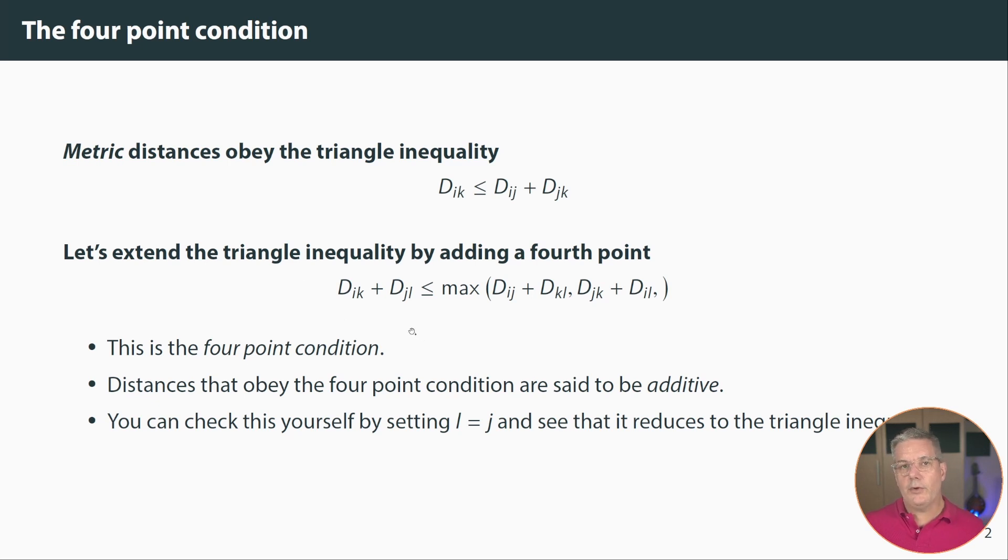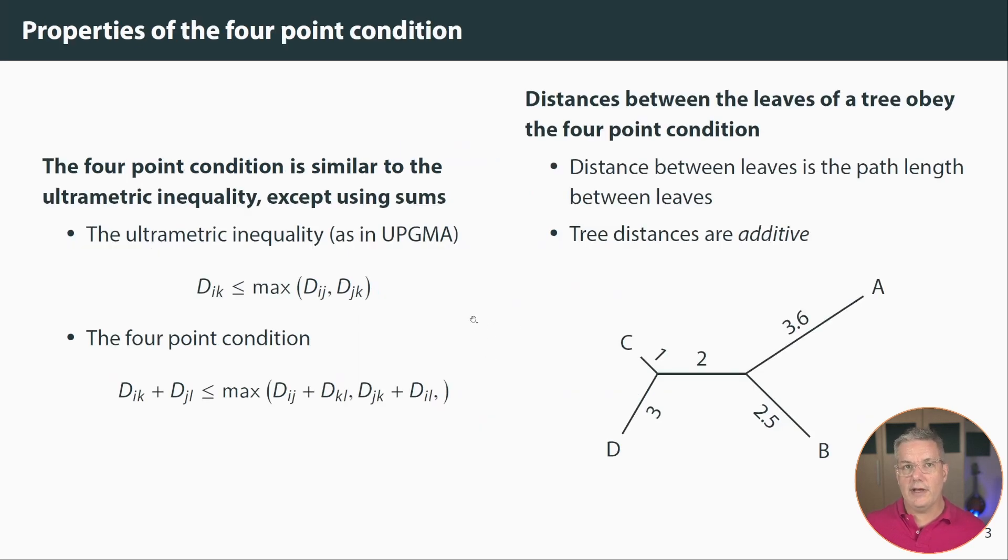If you're familiar with UPGMA you may have also noticed another feature of this inequality and that is it resembles in some way the inequality that we see in ultrametric distances that we use in UPGMA. In that inequality d sub ik is less than or equal to the max of these two other distances. Well the four-point condition is this same kind of formulation except that instead of an individual distance it's the sum of a pair of distances. But otherwise it looks very similar.